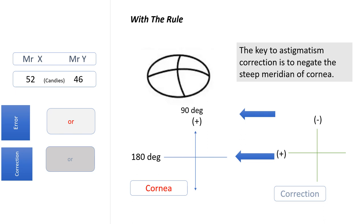For example, a patient with with-the-rule astigmatism at 90 degrees on the cornea can be corrected with minus glasses aligned to 90 degrees, or with plus glasses aligned to 180 degrees. So with glasses, correction can be done in both plus and minus cylinder formats.